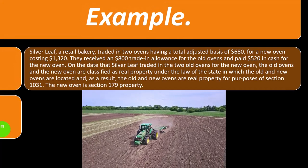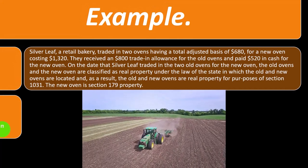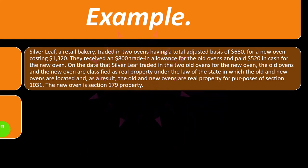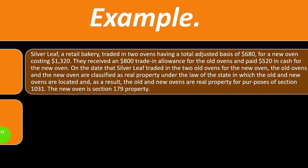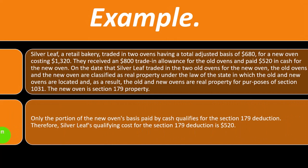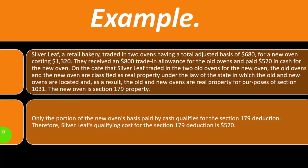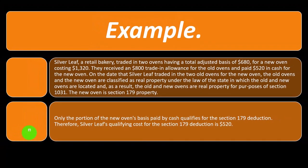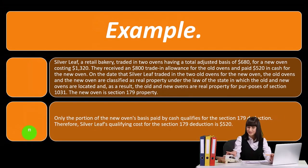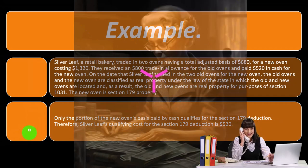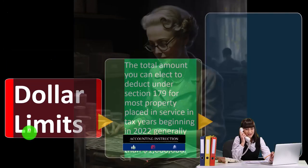Real estate typically must be depreciated over a longer period, whereas equipment can be depreciated over a shorter period or potentially with accelerated methods. In this example, the new oven is Section 179 property, but only the portion paid in cash qualifies for the Section 179 deduction. Therefore, Silver Leaf's qualifying cost for the Section 179 deduction is $520 — an interesting and somewhat unusual example.